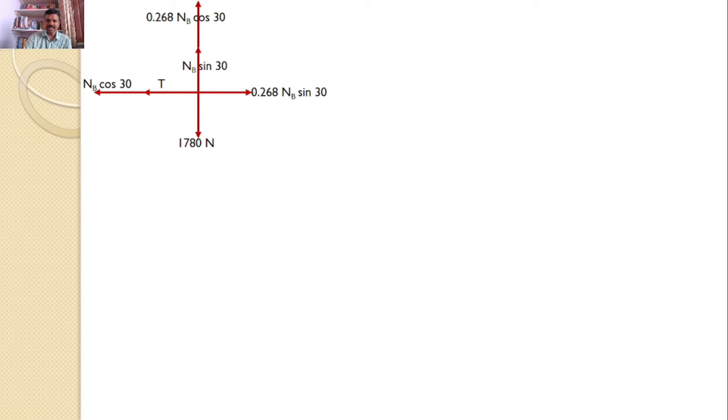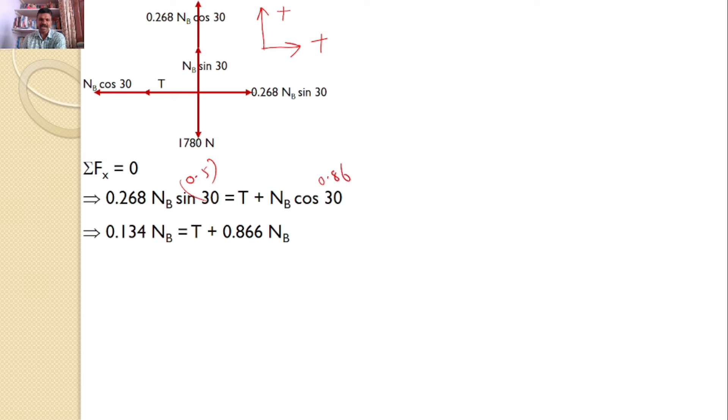Now, I will apply sigma Fx = 0 and sigma Fy = 0 equilibrium conditions. By considering sigma Fx = 0, and this direction is my positive direction for X-axis, and this direction for Y-axis. So, 0.268 NB sin 30 = T + NB cos 30. I can simplify because sin 30 = 0.5 and cos 30 = 0.866, and after simplification, you will get T + 0.732 NB = 0.